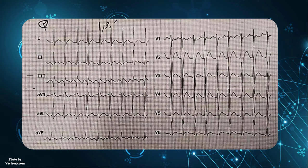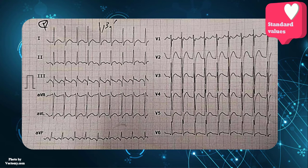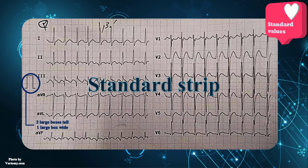To interpret every electrocardiogram properly, use the 10-step approach. First of all, start with standard values. In this strip, the calibration marker is one large box wide and two large boxes high. Thereby, this is a standardized 12-lead electrocardiogram.